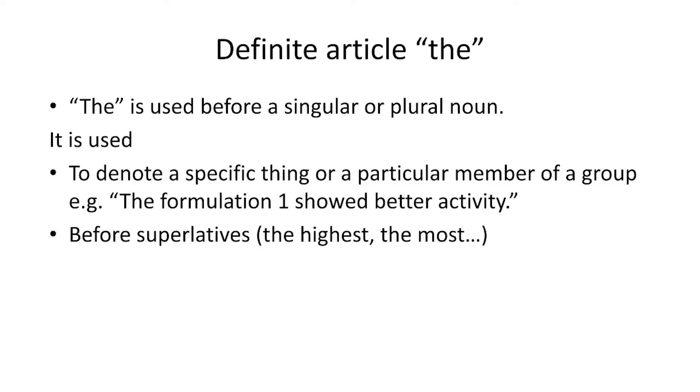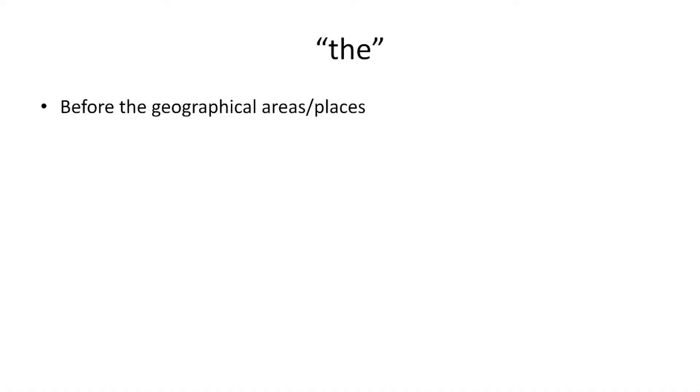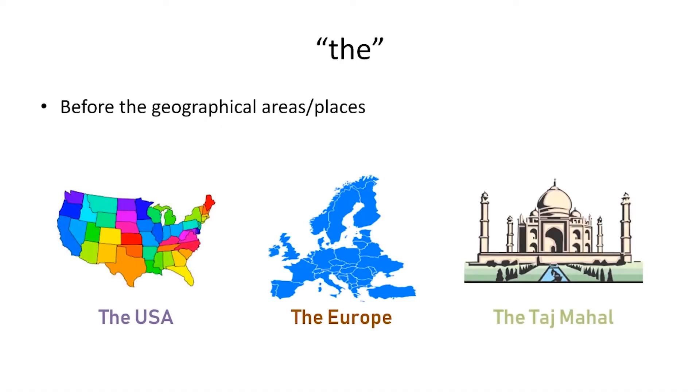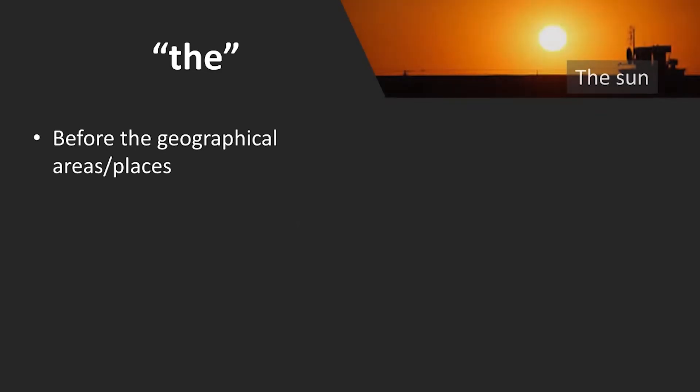Next, before the superlatives we use 'the': the highest, the most, the largest. Before geographical areas and places like the US, the Europe, the Taj Mahal. Or before natural things: the sun, the moon, the stars, the Himalaya, the Ganges.